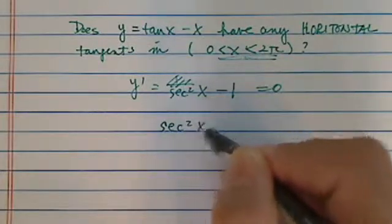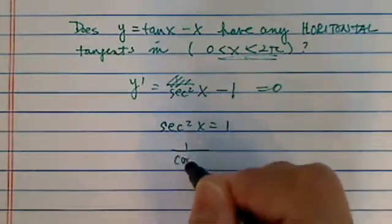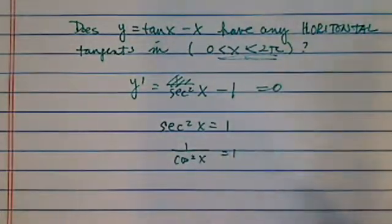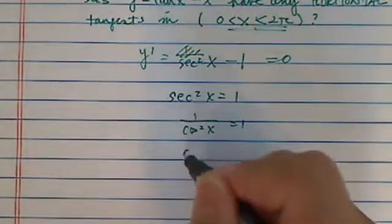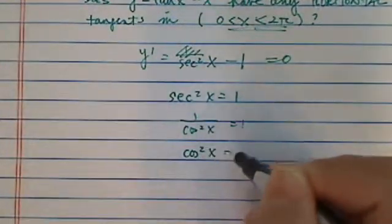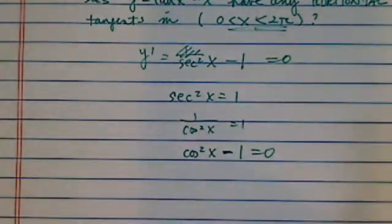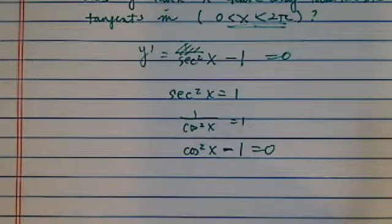Sec²x = 1, and secant is 1 over cosine, so 1/cos²x = 1. We're basically trying to find if cos²x = 1 has any solution, and that's the same as cos²x - 1 = 0.